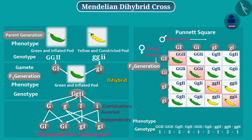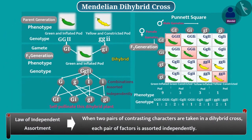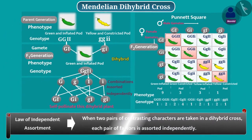Under the rule of dominance, the dominant character will be expressed. Therefore, in the F2 generation of dihybrid cross, only 4 phenotypes will be obtained in the ratio 9:3:3:1. Now you must have understood the law of independent assortment of inheritance. Today we have learned about the Mendelian dihybrid cross.